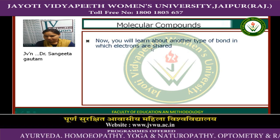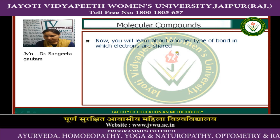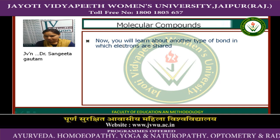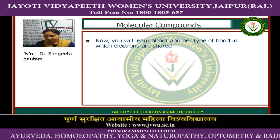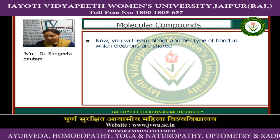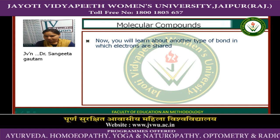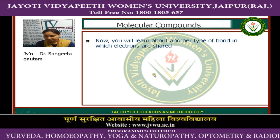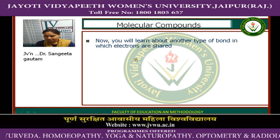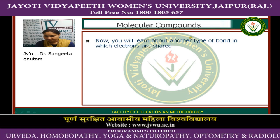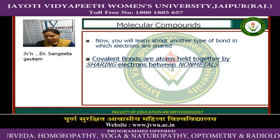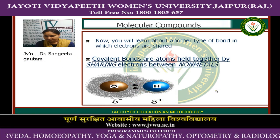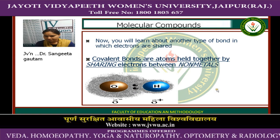Now you will learn about another type of bond in which electrons are shared. Previously we discussed ionic bonding and bond hypercycle, covering different types of ionic compounds. Today we are discussing molecular compounds which are formed by covalent bonding, and here we discuss covalent bonding in detail.